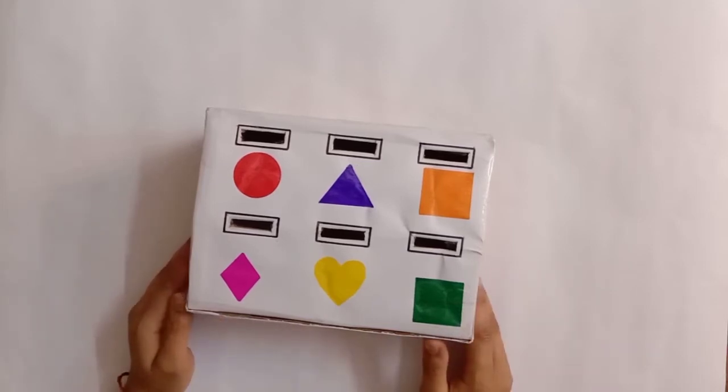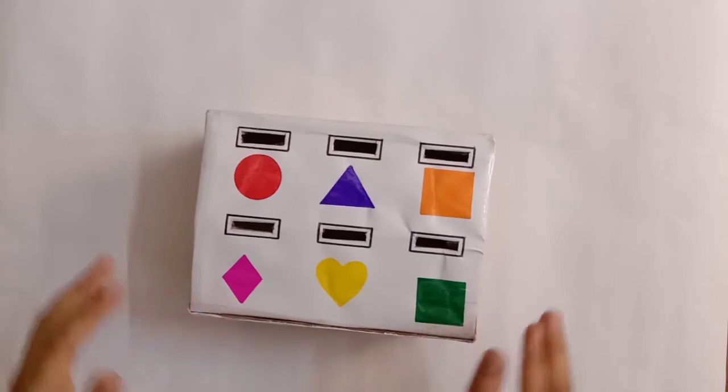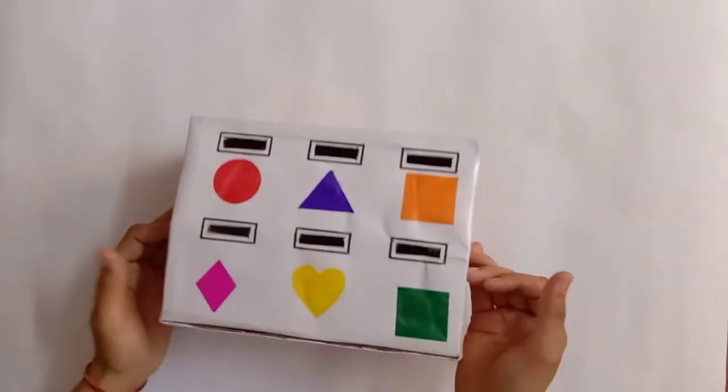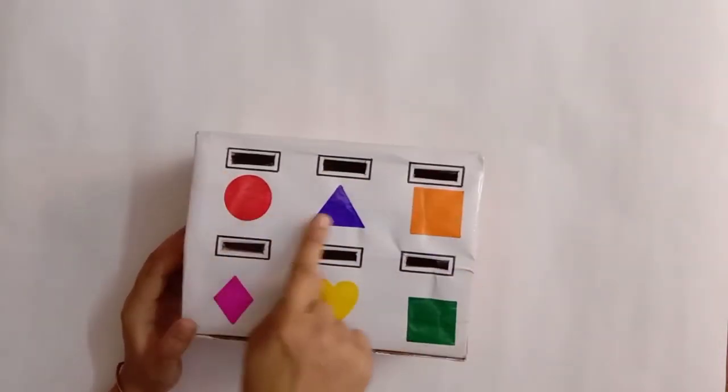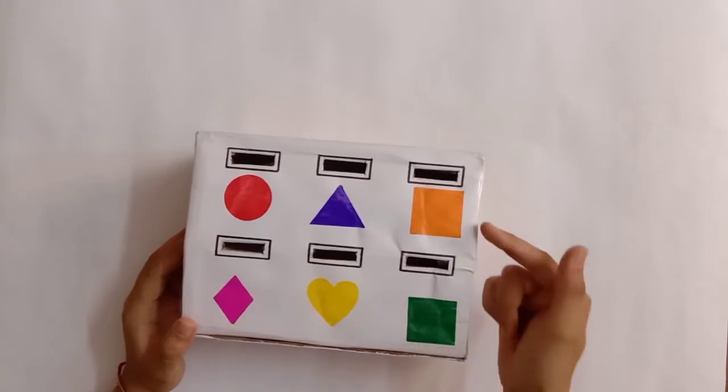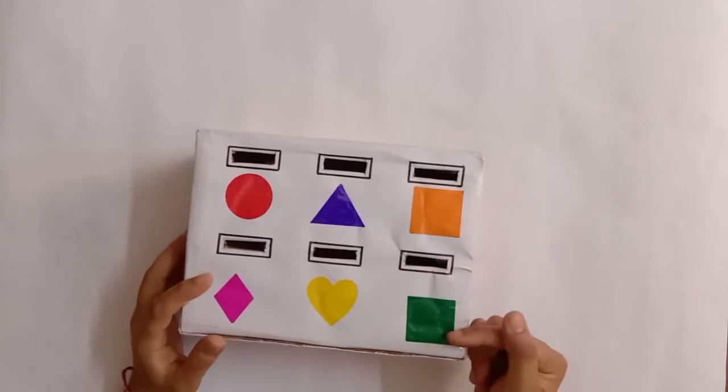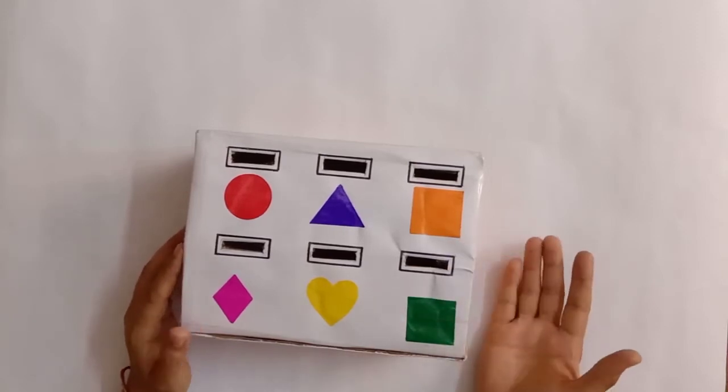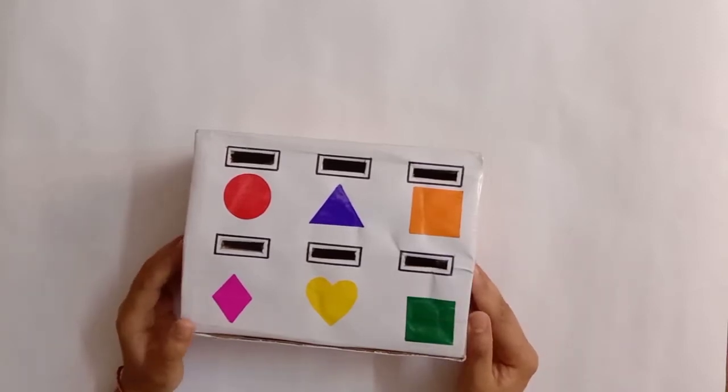For this activity, here I'm using a simple shoe box and on top of it using a white sheet I have drawn some shapes. Here as you could see I'm using two squares but of different colors, orange and green. I did this to make it a bit challenging for my child.